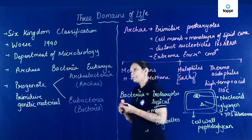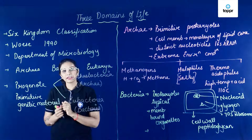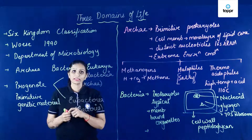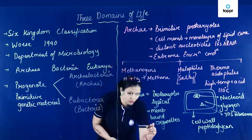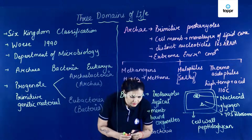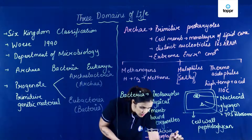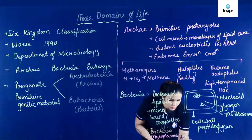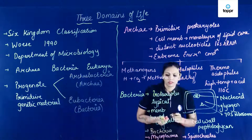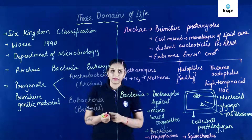In this way, Bacteria ke andar kya rakha gaya? Typical prokaryotes with these characters. Archaea mein kya rakha gaya? They have primitive prokaryotes. Now coming to the Bacteria — is ke andar koon koon sa organism rakha gaya? It includes Mycoplasma, Rickettsia, Firmicutes, Spirochetes. In ke andar Firmicutes, Spirochetes, Rickettsia and Mycoplasma rakha gaya.